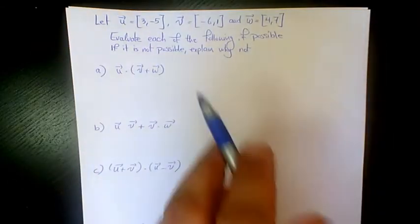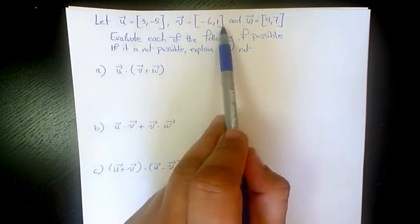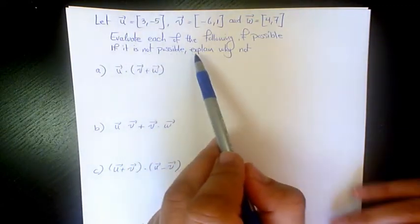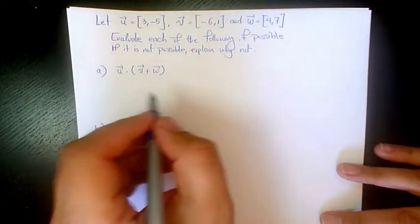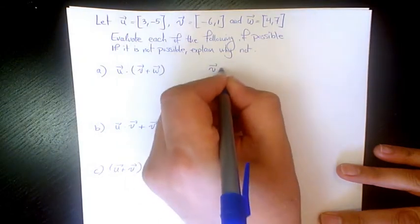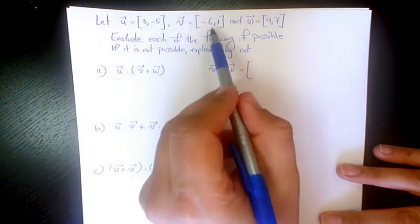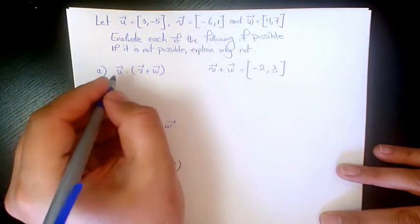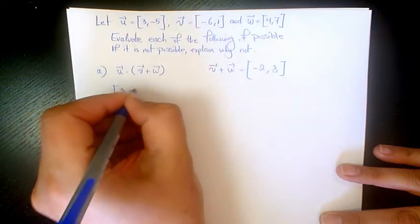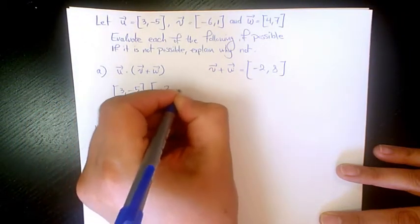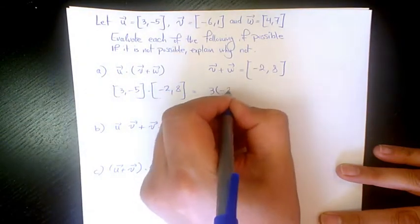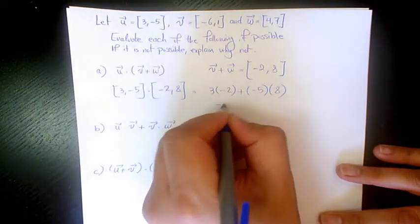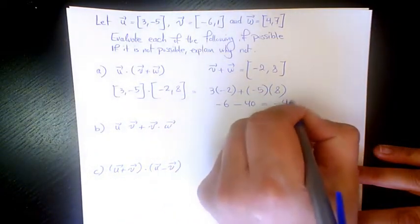Now, u is (3, -5), v is (-6, 1), and w is (4, 7). Evaluate each of the following. First, u dot (v plus w): v plus w is (-6+4, 1+7) = (-2, 8). Then u dot (-2, 8) = 3 times -2 plus -5 times 8 = -6 minus 40 = -46.